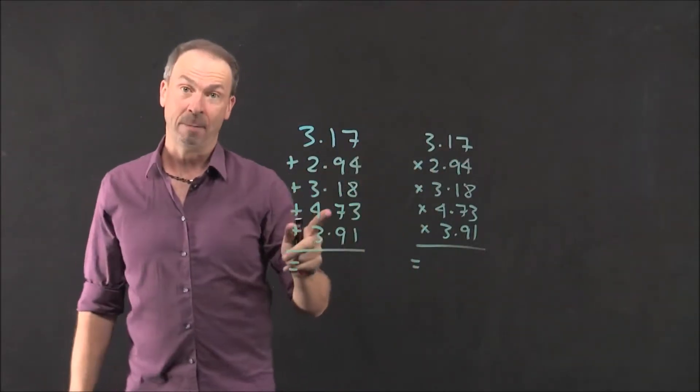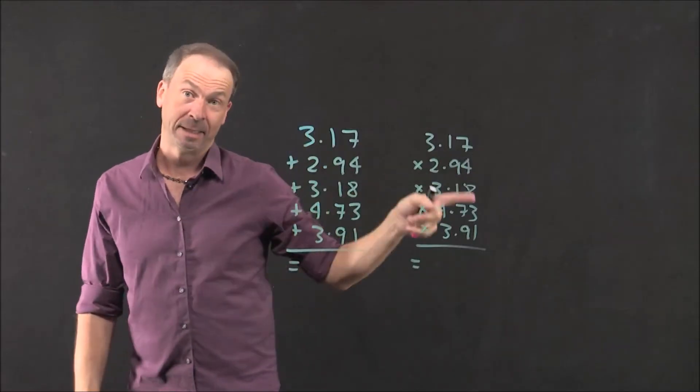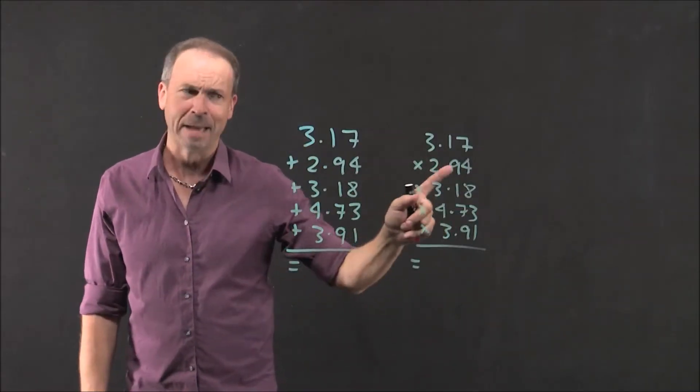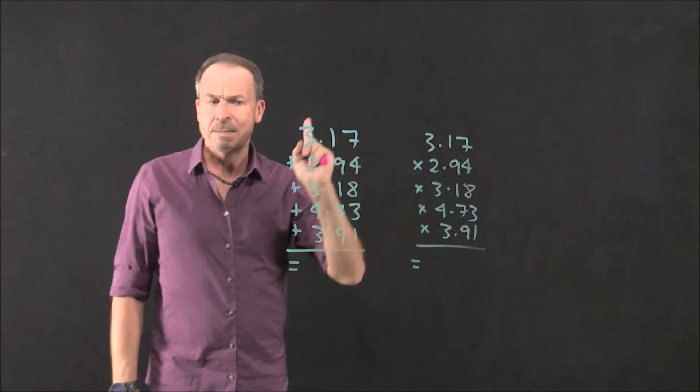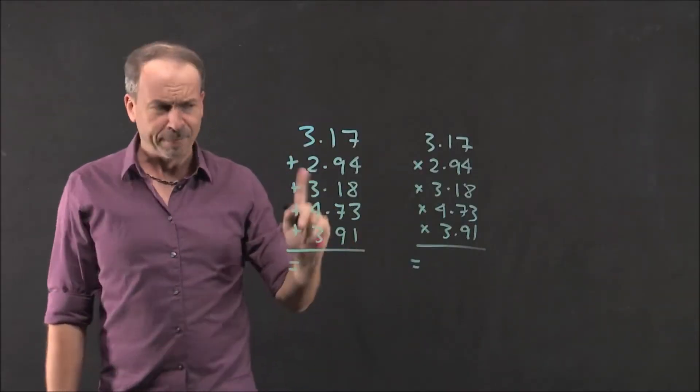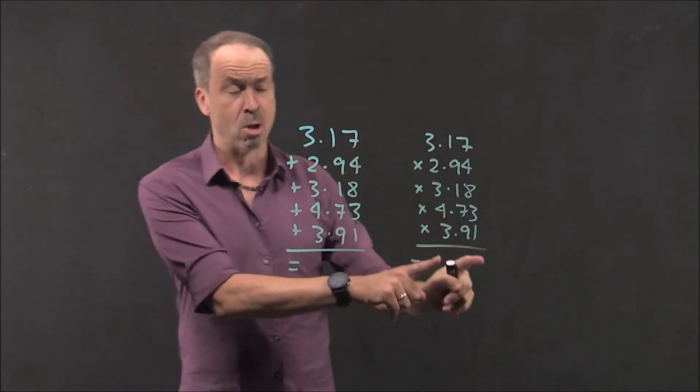So he thought about this for a long while. He lived about 1550 to 1617. Actually not about, exactly that. So he lived the late 1500s. He must have thought about this problem for decades because he came up with a way to do this, a way to convert multiplication problems